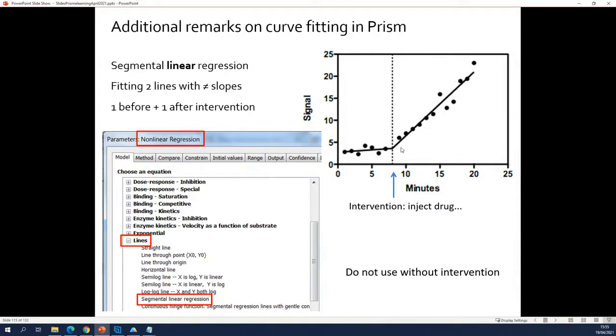So something that looks like this. If this is what you do, if you do an intervention like you give them a drug or you make them sick at some point, then there is something called Segmental Linear Regression.